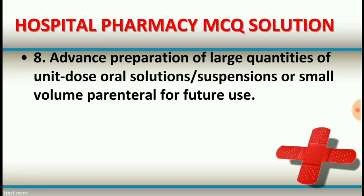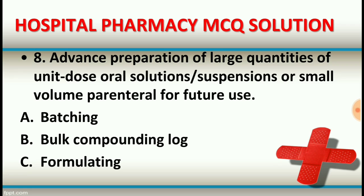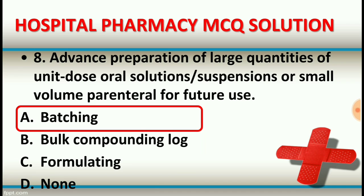Question number eight: Advanced preparation of a large quantity of unit dose oral solutions, suspensions, or small volume parenterals for future use is: batching, bulk compounding log, formulating, or none of these. The right answer is option A, batching. Advanced preparation of unit dose solutions, suspensions, or small volume parenterals for future use is called the batching process.